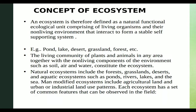Natural ecosystems include terrestrial types such as forest, grassland, and desert, as well as the aquatic ecosystem.